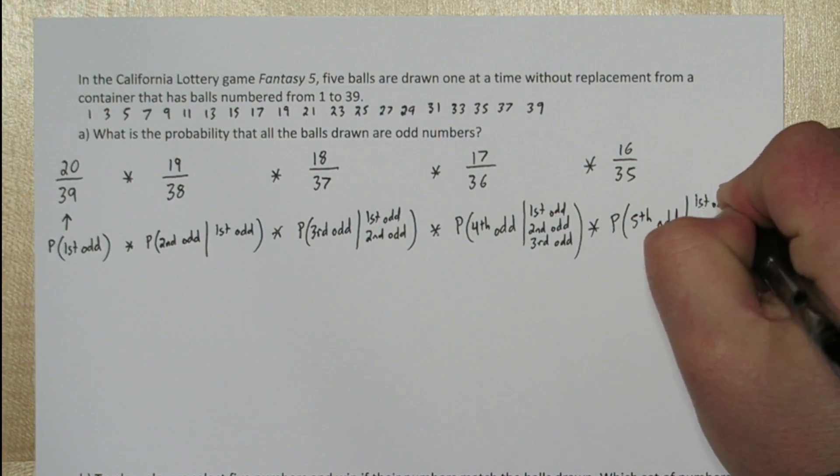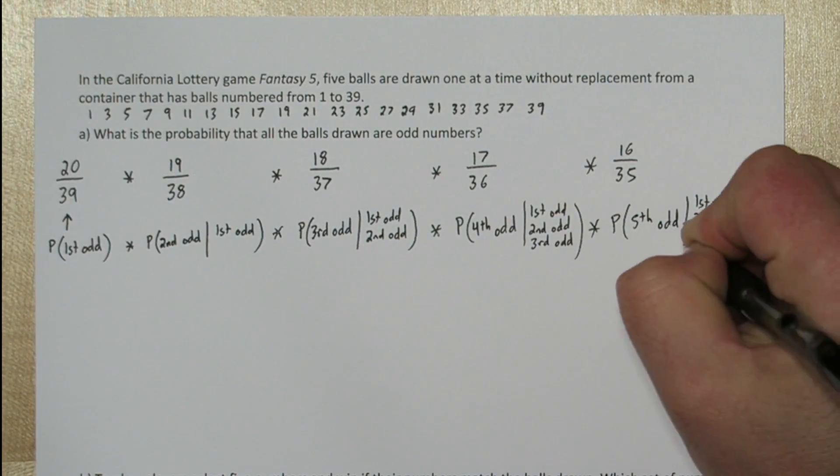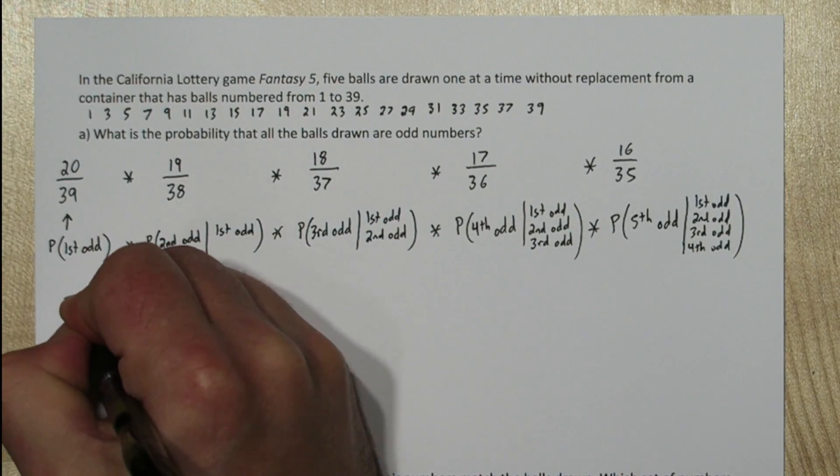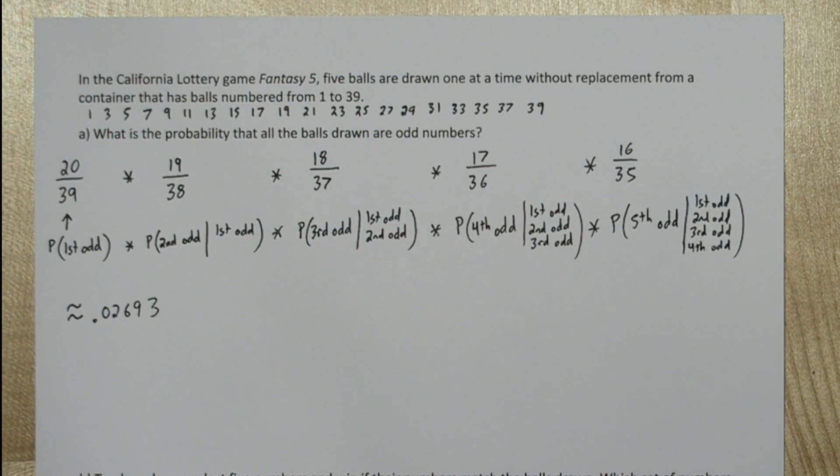And the probability the fifth number is odd follows the same pattern. So by multiplying these, we get the total probability that all the balls are odd, about 0.02693.